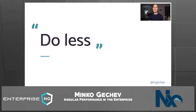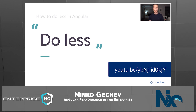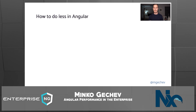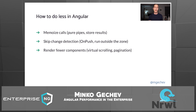At ng-conf 2018, I gave the talk 'Optimizing an Angular Application,' where I explained several practices that can make Angular do less, improving our app's performance. Things haven't changed much over the past few years, and these practices are still valid. In fact, I would recommend watching that video to get more value out of this current one. We can memoize calculations using pure pipes or storing results out of calculations. We can skip change detection using OnPush or running code outside of the Angular zone. And we can render fewer components using virtual scrolling or pagination.